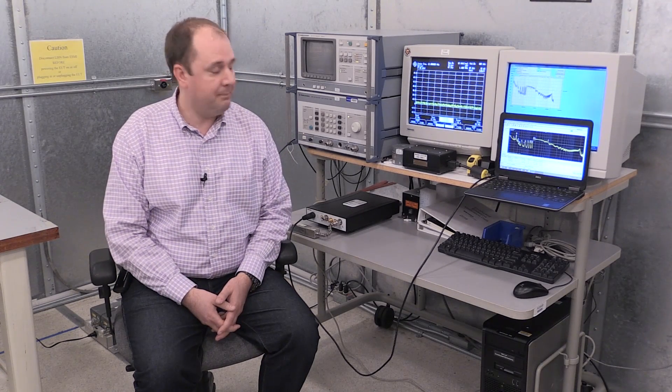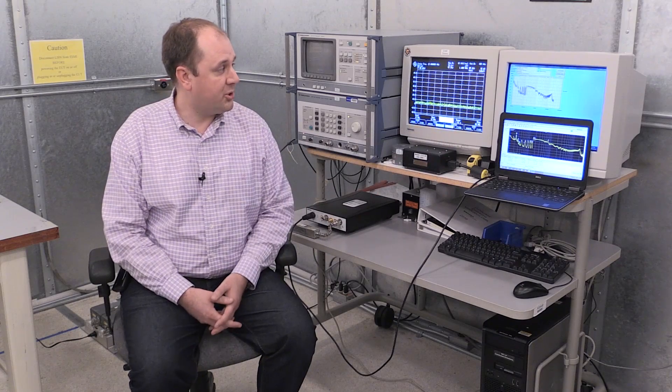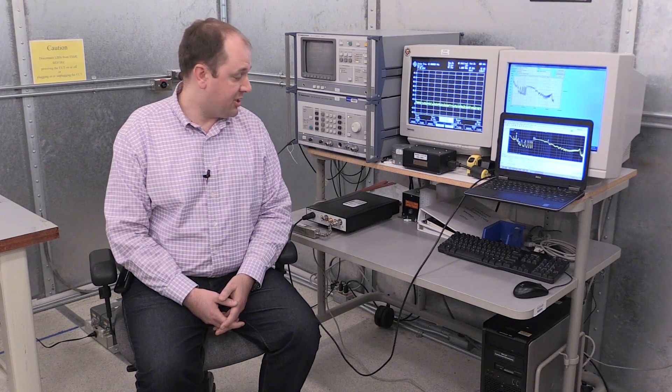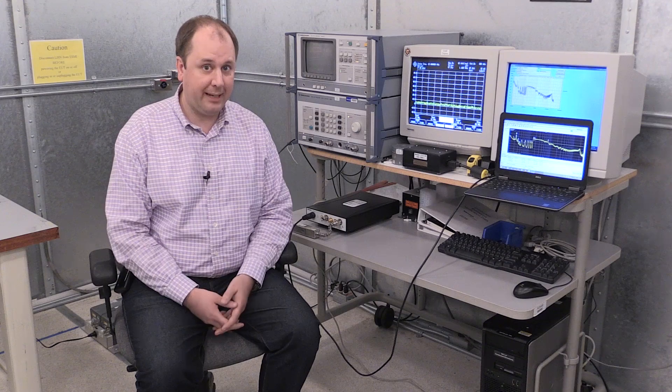We're still doing the conducted emissions test per CISPR 11 with our device under test. The line impedance stabilization network or LISN is directly behind me. We can see that the results track very closely and we'll take a closer look at those results here in a minute, but it's the same kind of test for conducted emissions. I haven't changed anything for the setup and I'm able to get the same results with the RSA 600 series.